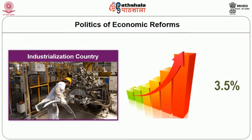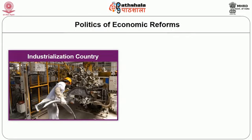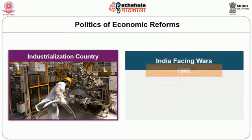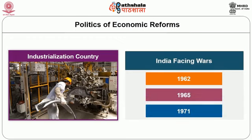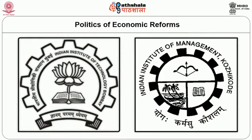The development planning model brought a degree of industrialization — India became an industrialized country. During this phase, India had a slow but steady 3.5% growth rate despite facing wars in 1962, 1965, and 1971. India's development planning model helped build economic infrastructure and human capital — IITs, IIMs, and universities — which prepared the ground for India becoming an IT superpower in the 1990s.